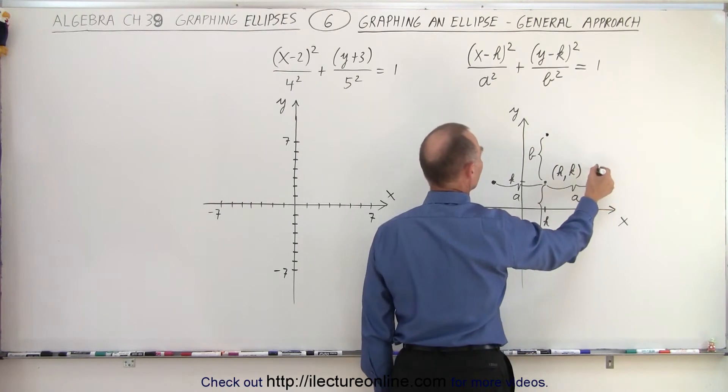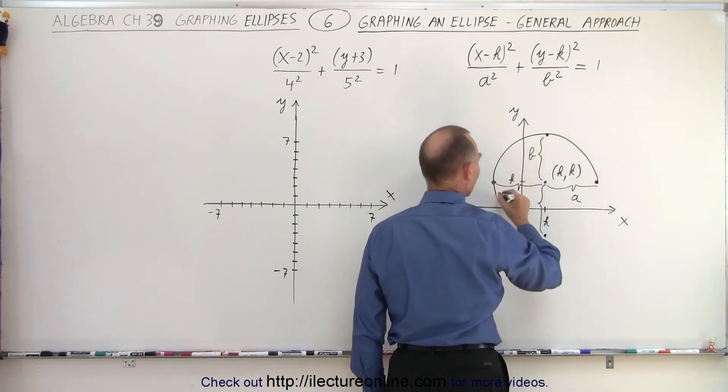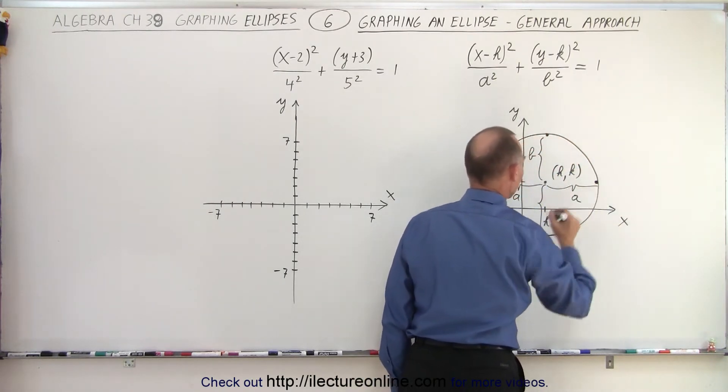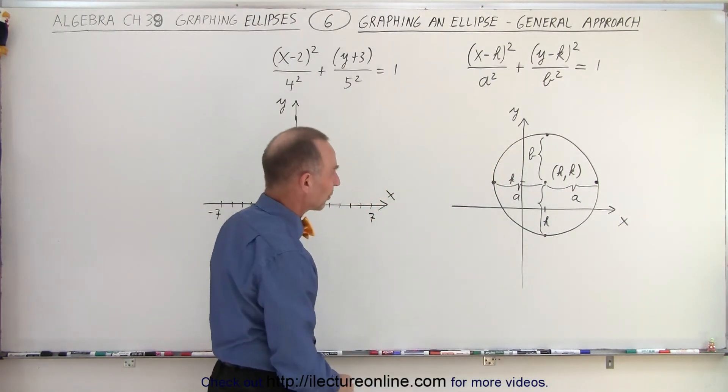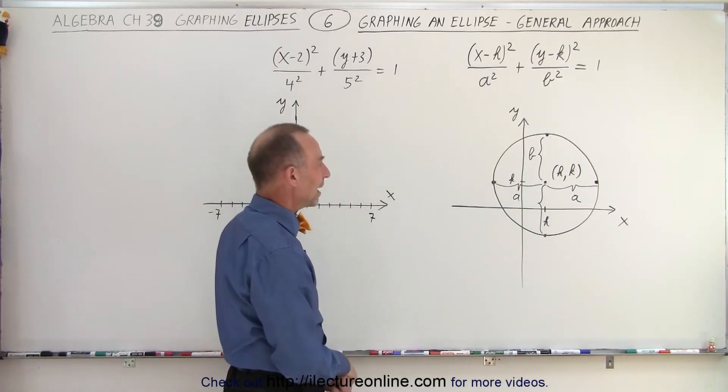And then all we have to do is connect those dots, and we have the graph of an ellipse. In this case, it looks almost like a circle, but that's quite all right. It's the methodology that matters.